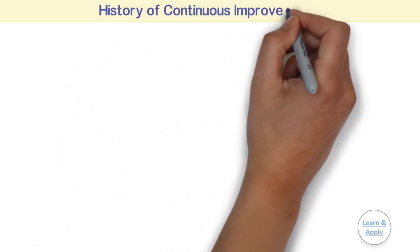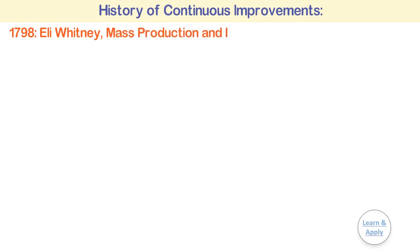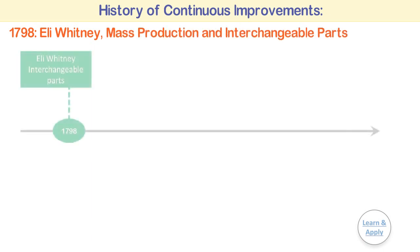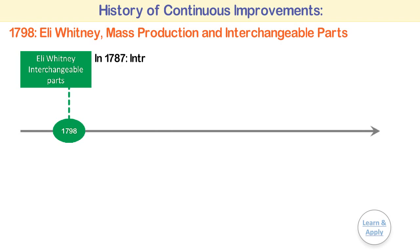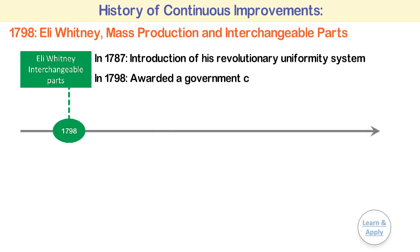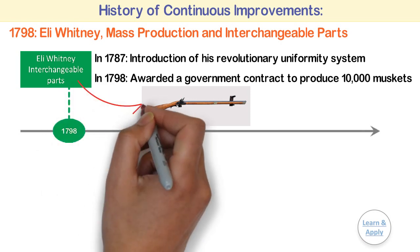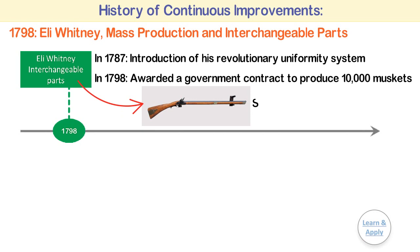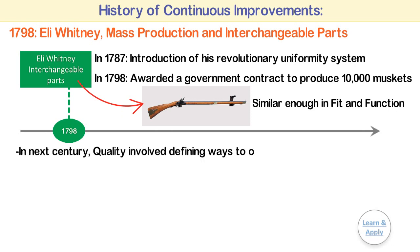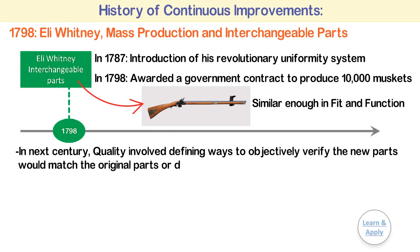History of Continuous Improvements — 1798: Eli Whitney and mass production with interchangeable parts. Best known for his invention of the cotton gin, Eli Whitney had a greater impact on modern manufacturing with the introduction of his revolutionary uniformity system. In 1798, Whitney was awarded a government contract to produce 10,000 muskets. He proved that it was possible to produce interchangeable parts that were similar enough in fit and function to allow the random selection of parts in the assembly of muskets. Throughout the next century, quality involved defining ways to objectively verify that new parts would match the original parts or design.